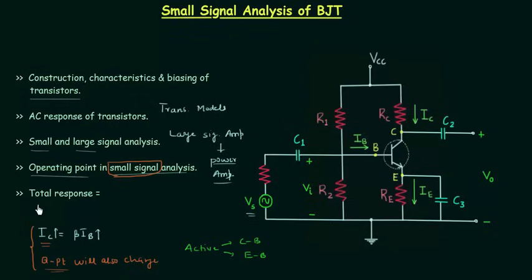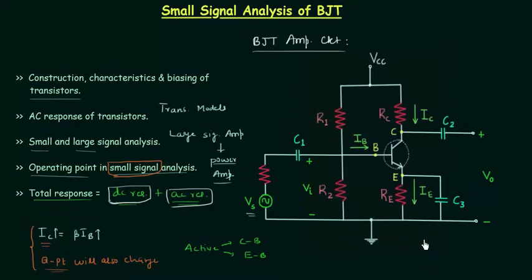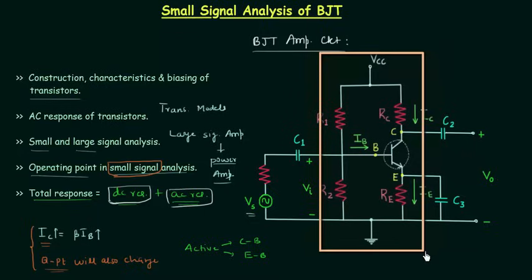The total response is equal to the DC response plus the AC response, and we can analyze them separately. We have already completed the DC response part and now we will complete the AC response. For this we must have a clear idea about the BJT amplifier circuit. The portion inside the rectangle is voltage divider bias, which we completed in the previous chapter.